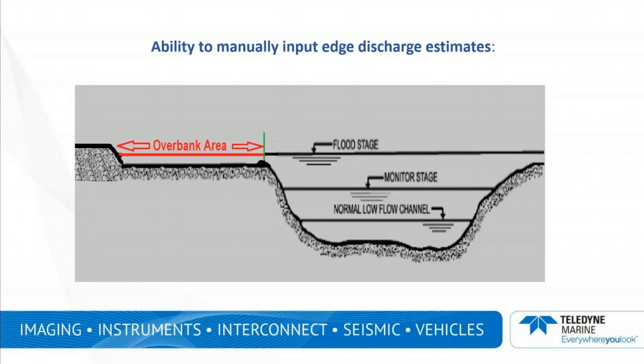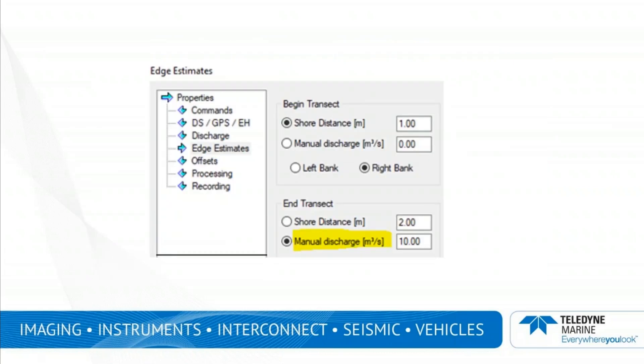Care should be used to measure the respective edges up to the green line in both directions and not to cause any overlapping. In this example, if the main channel transit was started on the right bank and the overbank area has a discharge of 10 cubic meters per second, then select the transit and enter 10 for the manual discharge.